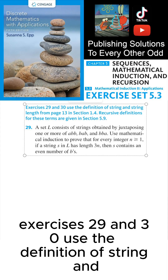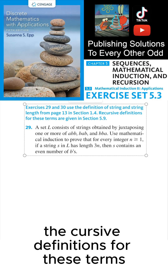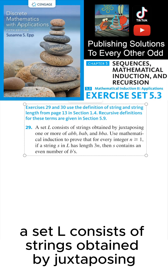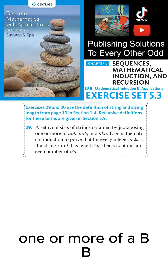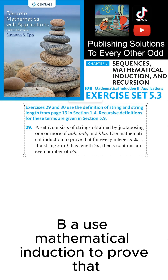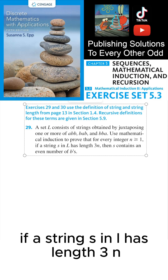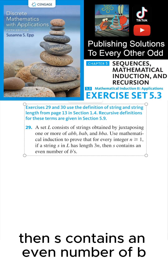Exercises 29 and 30 use the definition of string and string length from page 13 in section 1.4. Recursive definitions for these terms are given in section 5.9. A set L consists of strings obtained by juxtaposing one or more of ABB, BAB, and BBA. Use mathematical induction to prove that for every integer n greater than or equal to 1, if a string S in L has length 3n, then S contains an even number of Bs.